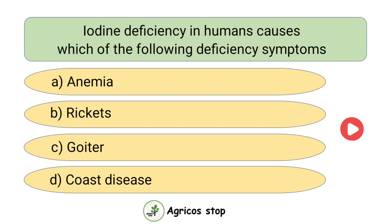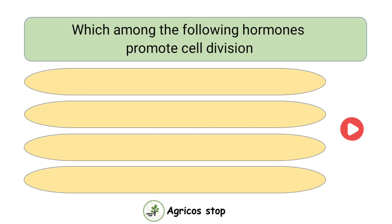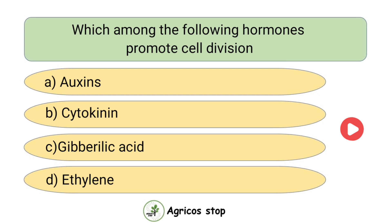Iodine deficiency in humans causes which of the following? Options are Anemia, Rickets, Goiter, and Cause Disease. The answer is Goiter. Iodine deficiency in humans causes Goiter.